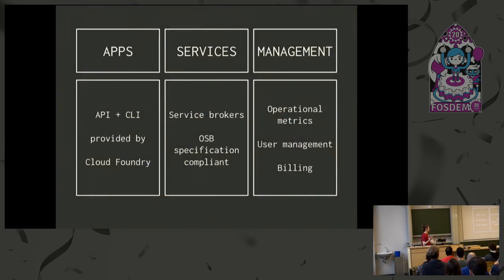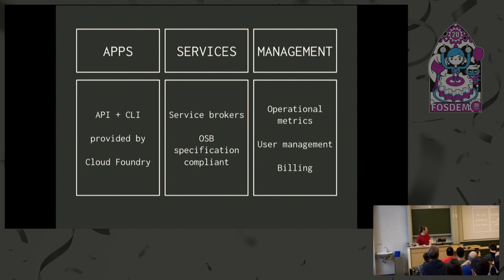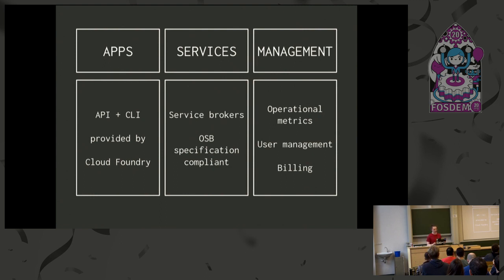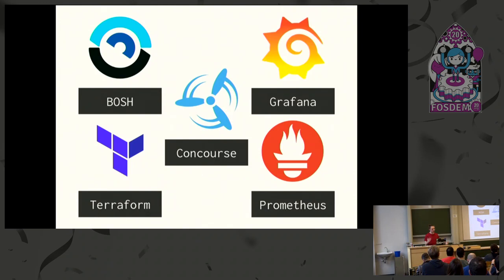This is the service we deliver to our users: there's an API and a CLI — you can run cf push on your laptop and your application gets hosted, you can serve traffic, your users can use it. We provide service brokers so you can get a managed database without worrying about backups. We also handle billing and track which developers are working on which services. The tools we use: Concourse in the middle, BOSH, Terraform, Grafana, and Prometheus.